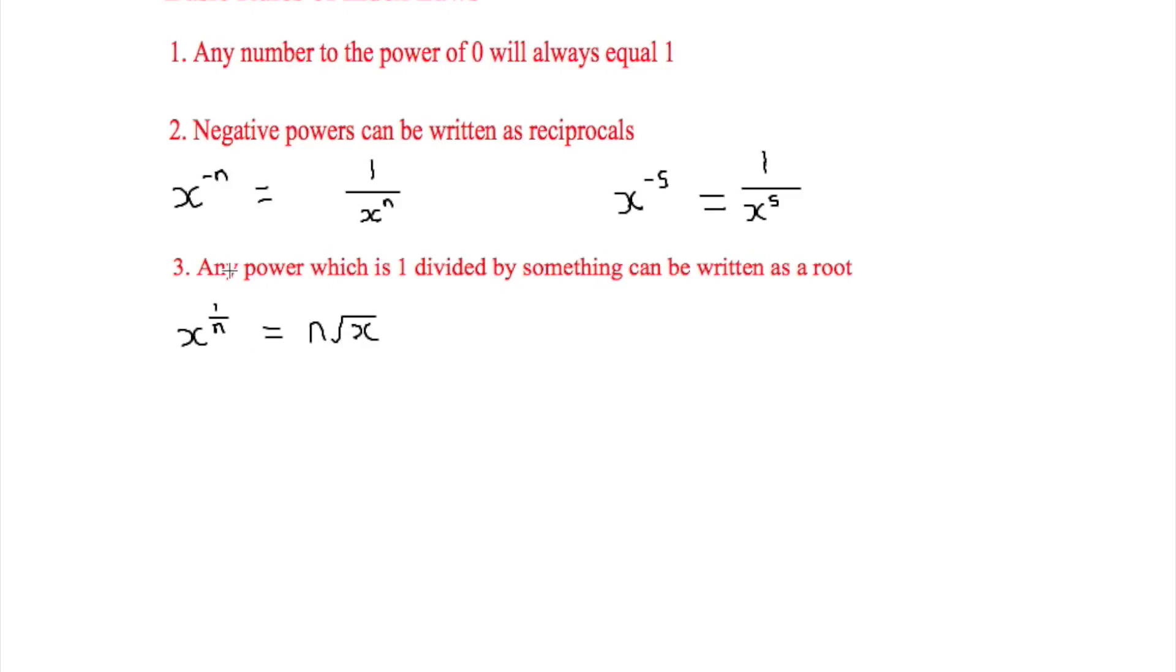Now the final one is that any power which is 1 divided by something can be written as a root and I've shown here again that x equals 1 over n is equal to n root x. So this time say that n is equal to 8 that's going to be 1 to the 1 eighth can also be written as root 8 of x.